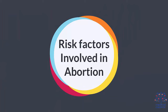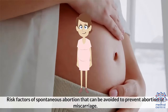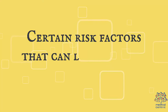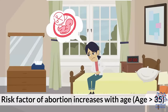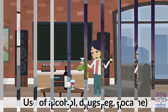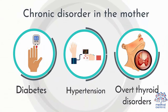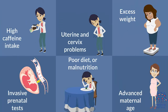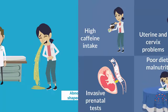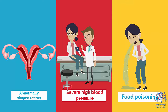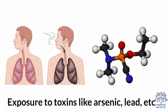Risk factors involved in abortion. Risk factors of spontaneous abortion can be avoided to prevent abortion or miscarriage. Certain risk factors include: age greater than 35, history of spontaneous abortion, tobacco consumption, use of alcohol, drugs such as cocaine, chronic disorders in the mother such as diabetes or hypertension, overt thyroid disorders, high caffeine intake, uterine and cervix problems, excess weight, invasive prenatal tests, poor diet or malnutrition, advanced maternal age, abnormally shaped uterus, severe high blood pressure, food poisoning, exposure to toxins like arsenic and lead, and use of certain medications.